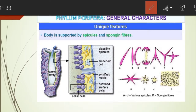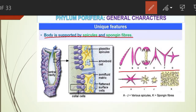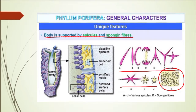The body is supported by spicules and spongine fibers. In the diagram you can see the spicules — these are pointed or tapering structures. This is the spongine fiber. The body gets support through both spicules and spongine fibers.